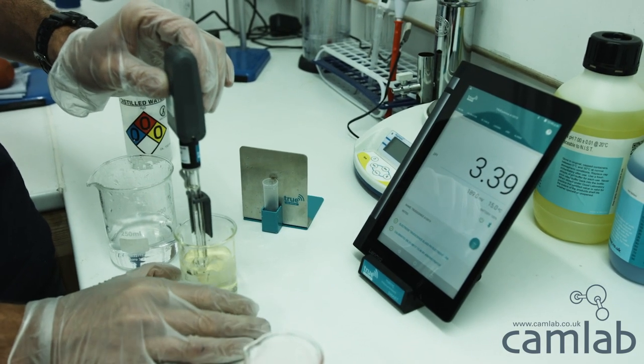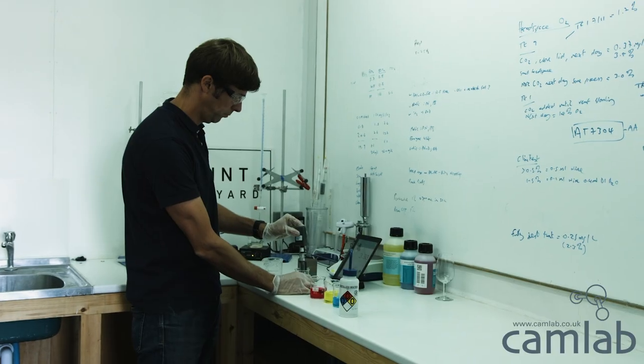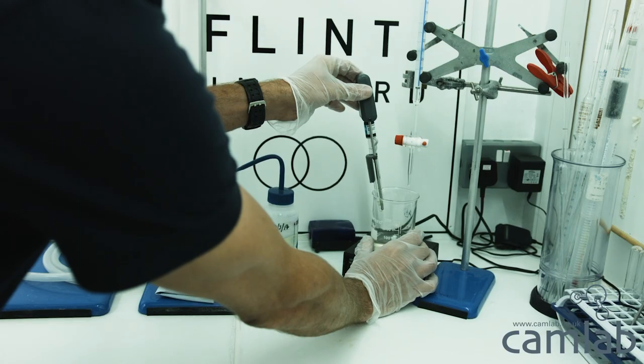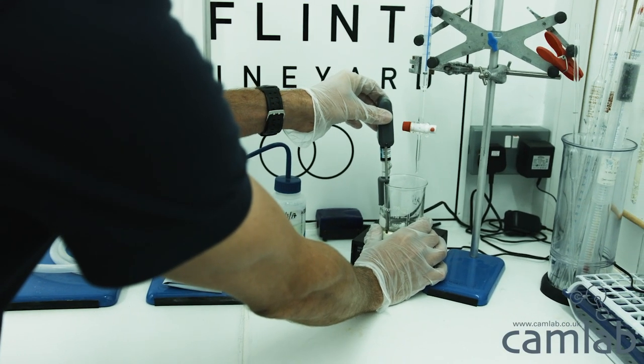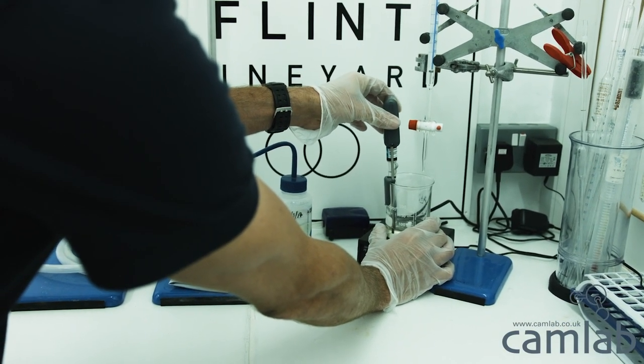I can do readings in the winery, so it's very useful from that point of view. Also, because the probe clips off and we can attach it to beakers, one of the things we do is measure the titratable acidity.